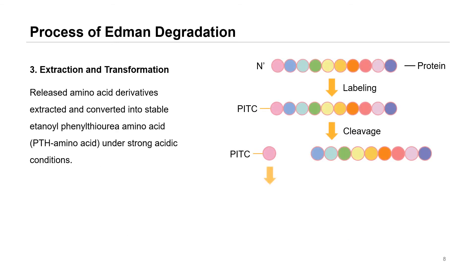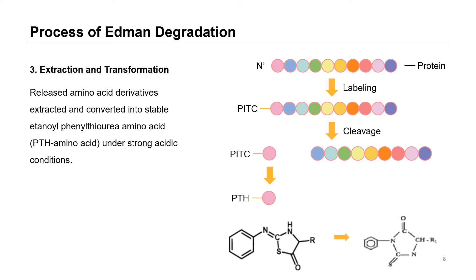Subsequently, the released amino acid derivative is extracted and converted to a stable phenylthiohydantoin (PTH) amino acid under strong acidic conditions. The amide bonds in the remaining peptide chain are unaffected. The amino acid can be identified by analyzing the resulting PTH derivative by HPLC. Each reaction produces a polypeptide with the N-terminal amino acid residual removed, and the remaining peptide chain can enter the next cycle and continue to undergo degradation.